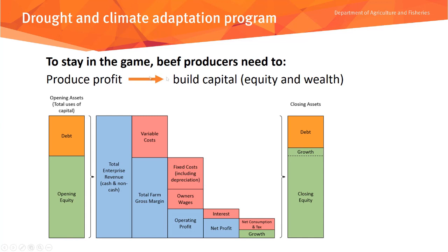Producing a profit provides a buffer. No matter what sort of beef production system you have, at the start of any production period — whether the next 12 months or the next decade — you have a series of assets or an amount of capital to apply as a resource to produce beef. That opening capital can be made up of your equity and somebody else's capital, which we call debt.